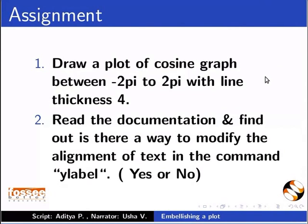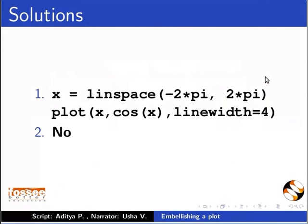And the answers are: In order to plot a cosine graph between the points minus 2pi and 2pi with line thickness 4, we use the linspace and plot command as x is equal to linspace inside the brackets minus 2pi comma 2pi, plot x comma cos x comma linewidth is equal to 4. The answer to the second question is No! We do not have an option to modify the alignment of text in the command ylabel.